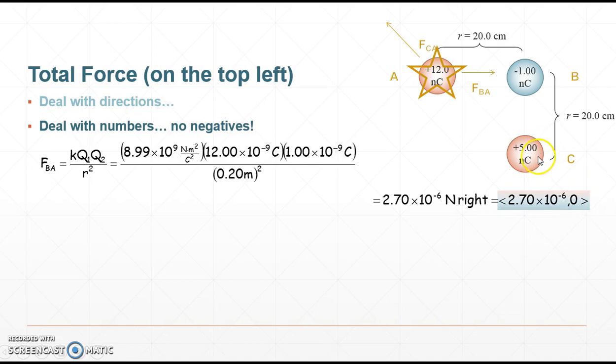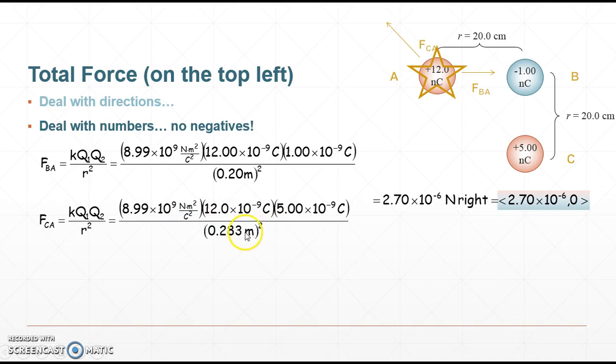Now do the same thing for charge C. Very, very carefully plug in your coulombs constant. Your first charge. Your second charge. Very, very carefully with pencils and drawings, and possibly a little bit of math, find the distance between them. That's right. B to C is 20 centimeters, but A to C is not. This is a 45-45-90 right triangle. You have to draw that in. You have to find that hypotenuse. It's 20 centimeters rad 2, which is about 0.283 and some change meters.